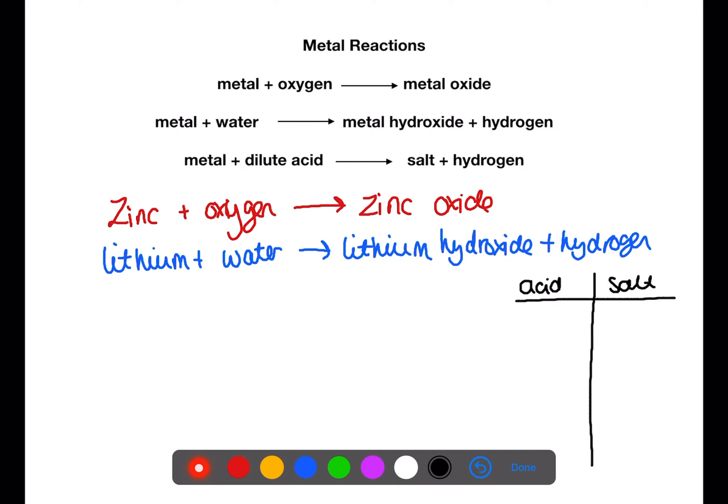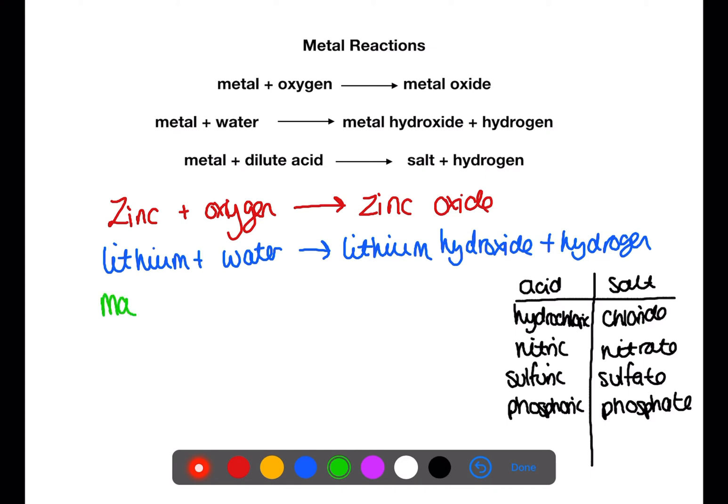If you have hydrochloric acid then you will produce a chloride salt. If you have nitric acid you will produce a nitrate salt. If you have sulfuric acid you will produce a sulfate salt. And if you have phosphoric acid you will produce a phosphate salt. Magnesium reacting with sulfuric acid you will produce magnesium sulfate and hydrogen.